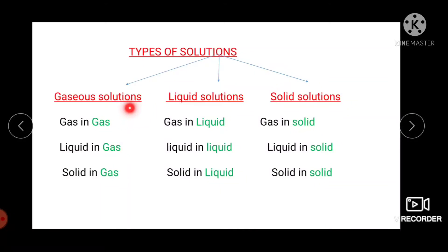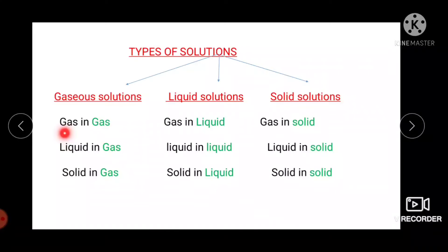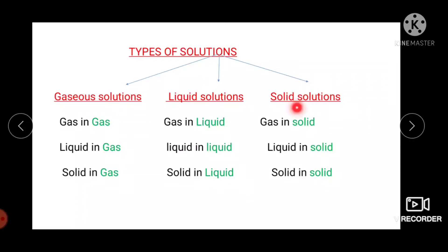Gaseous solutions are of three types: gas in gas, liquid in gas, and solid in gas — here gas is acting as solvent. In the case of gas in gas, two components are in the gaseous state; one acts as solute and the other as solvent. Liquid solutions are of three types: gas in liquid, liquid in liquid, and solid in liquid. Solid solutions are also of three types: gas in solid, liquid in solid, and solid in solid — in which both components are in the solid state, one acting as solvent and the other as solute.